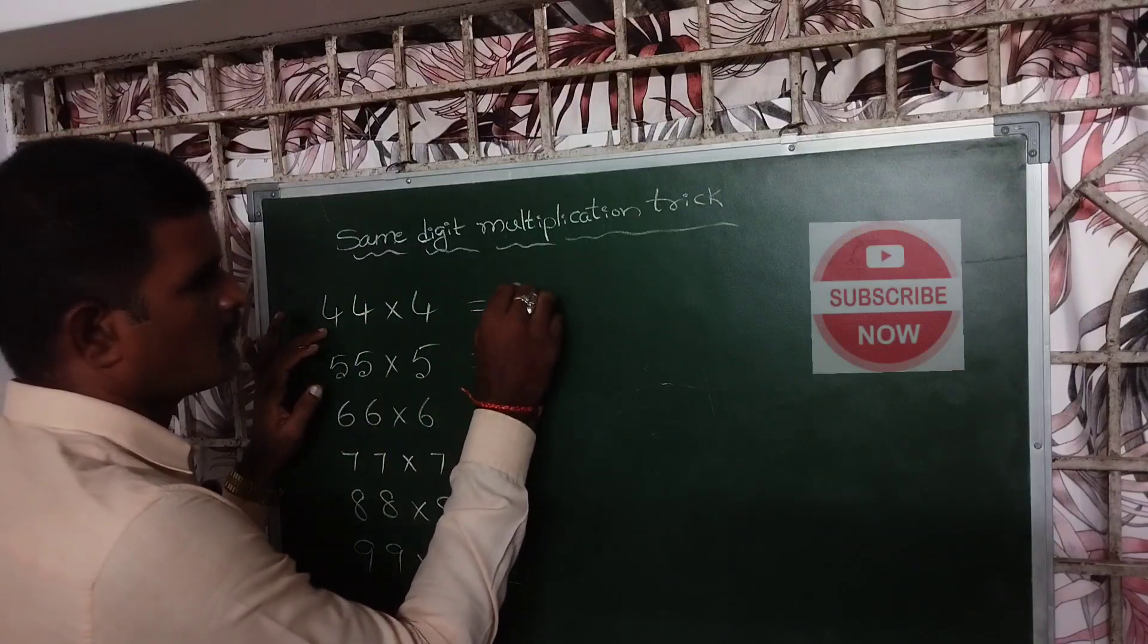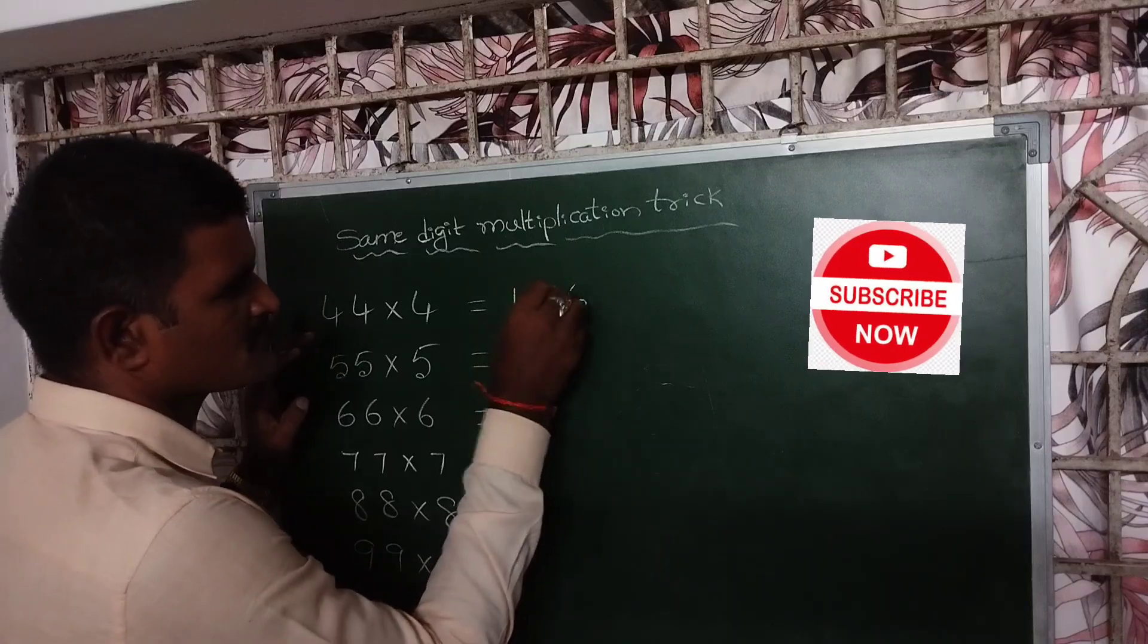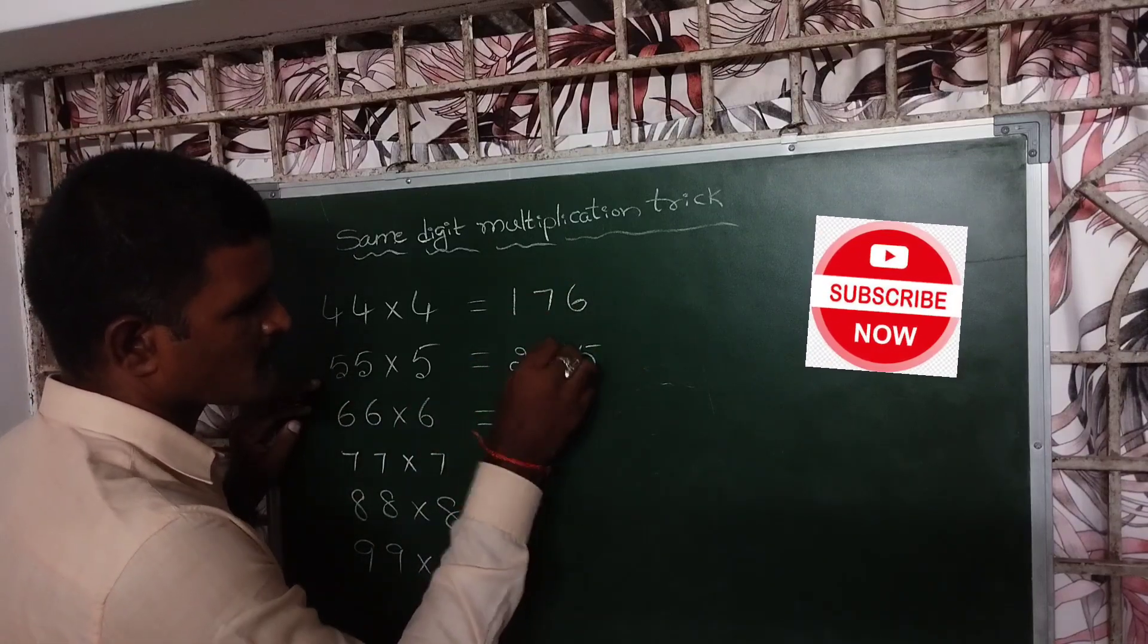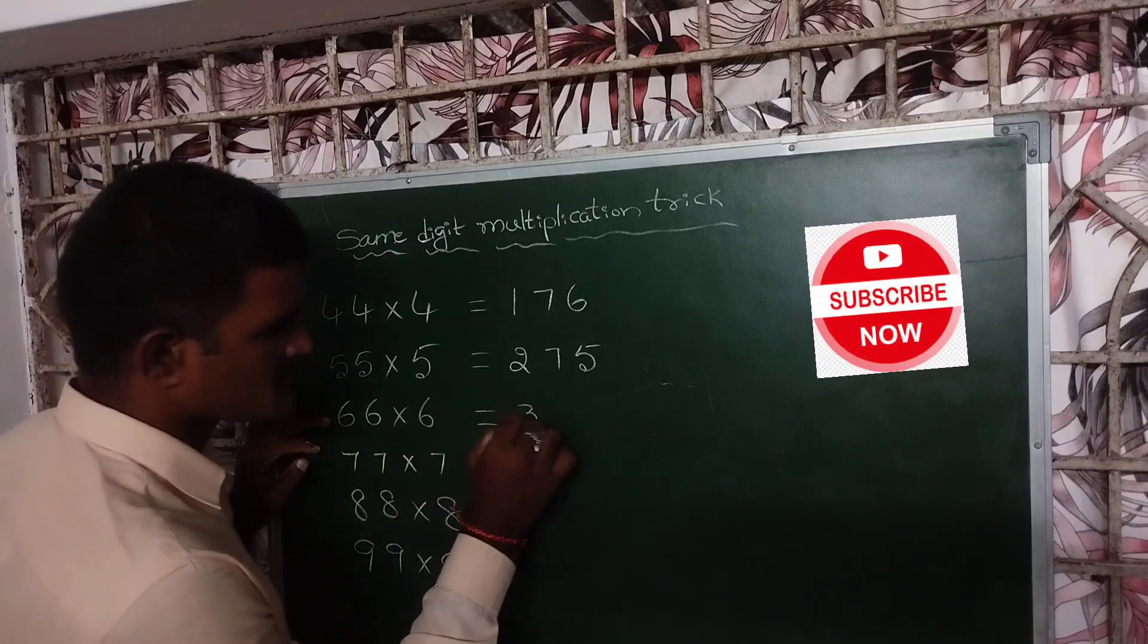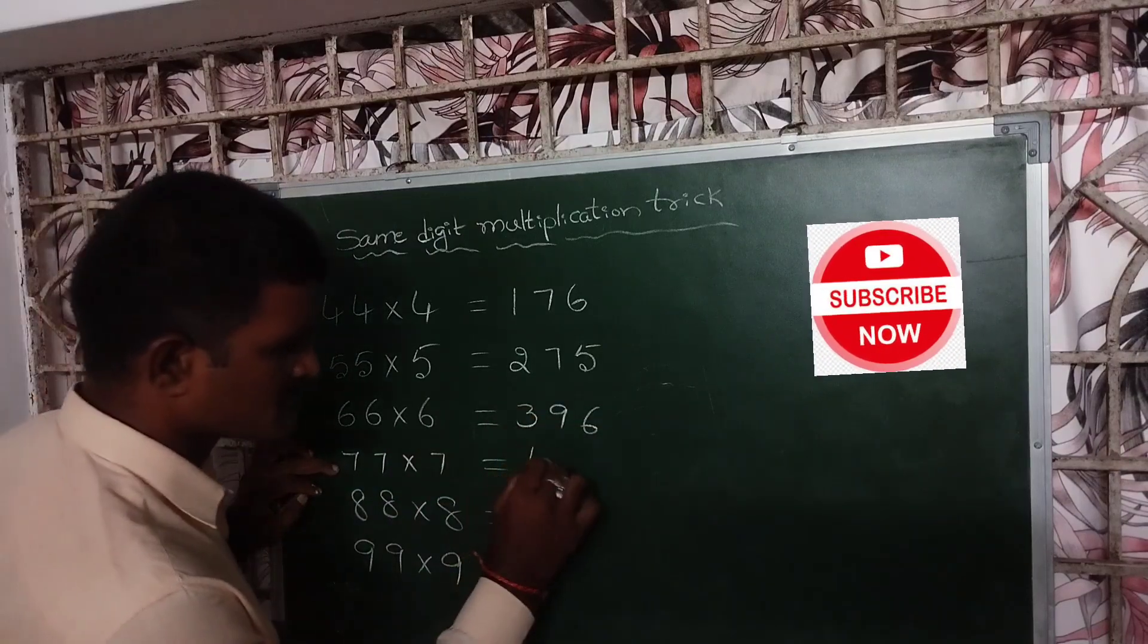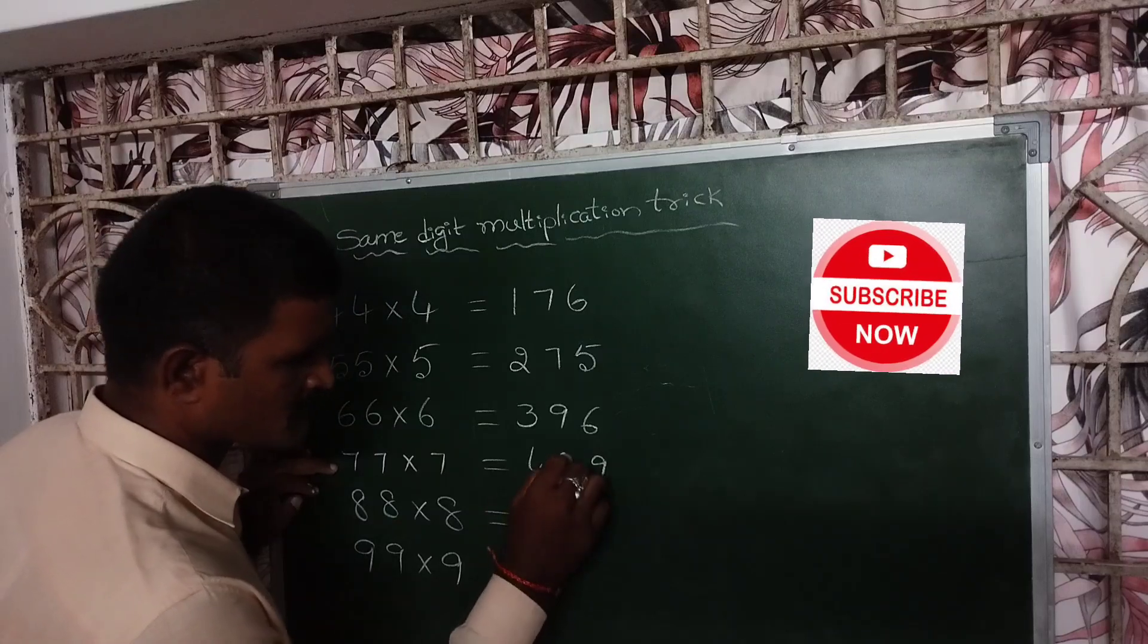44 into 4, 4 fours are 16, 1 plus 6 equals 7. 55 into 5, 5 fives are 25, 2 plus 5 equals 7. 66 into 6, 6 sixes are 36, 3 plus 6 equals 9. 77 into 7, 7 sevens are 49, 4 plus 9 equals 13.